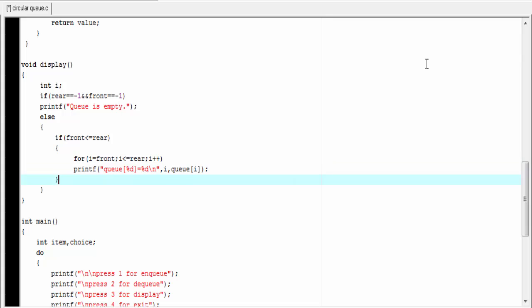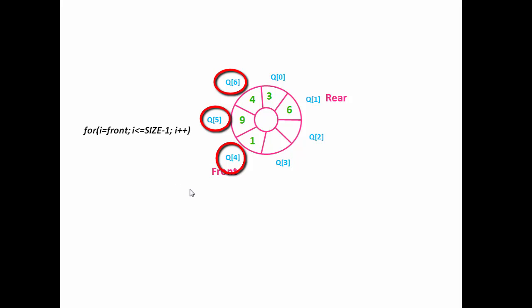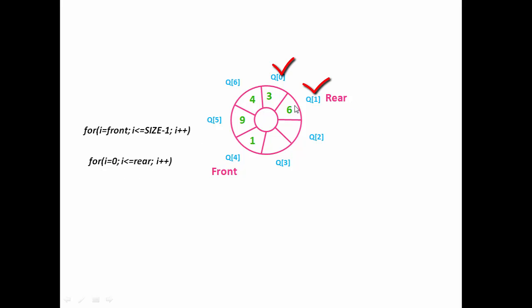But if front is greater than rear, then we need two loops to print the queue elements. For example, if front is at index 4 and rear is at index 1, front is greater than rear. In this case the first loop runs from front to size minus 1 — here we start from 0 so the last index will be size minus 1. This loop prints the elements from index 4 to 6. And we need a second loop that runs from 0 to the current rear index, printing the elements at index 0 and index 1.